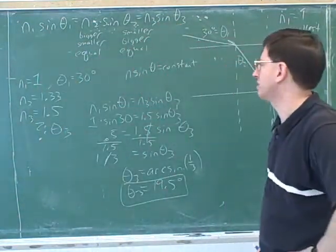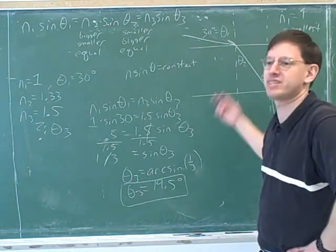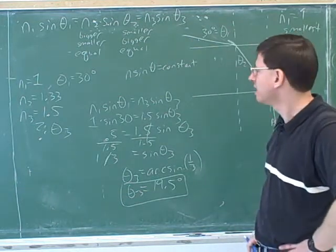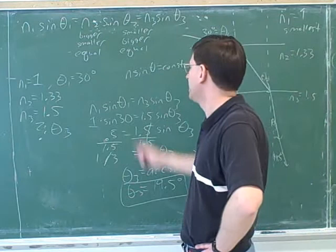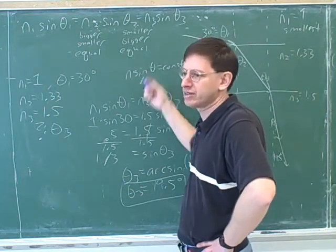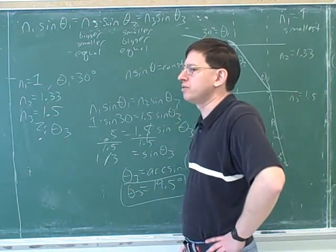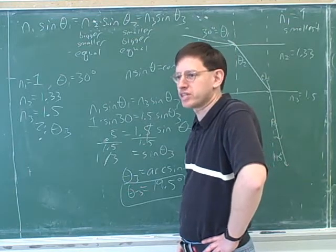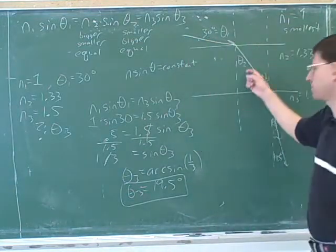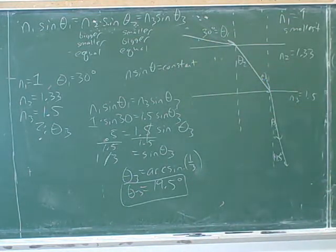Now, in this case, it just saved us a little time, but what if there were four or five mediums? You don't want to have to work through all those different mediums. So you just pick out the two n sine theta terms that you care about. One is the one you know the most about, and the other is the one the question is about. We don't actually have to follow the light chronologically to work this through, even though that seems logical.